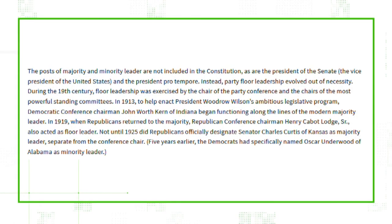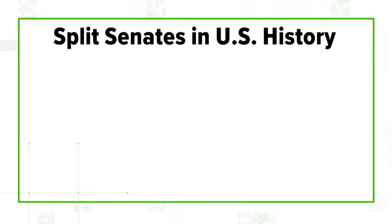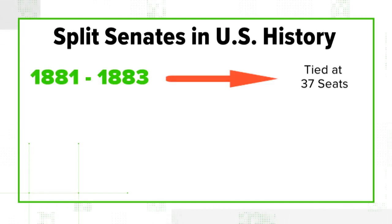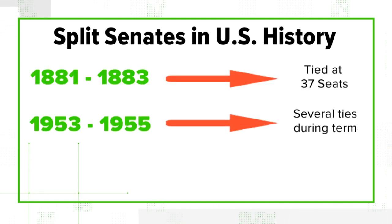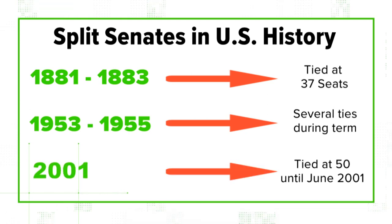The majority leader position is not mentioned in the Constitution. The Senate website confirms that, saying the majority and minority leaders evolved out of necessity. Audet says a split Senate has happened three times in U.S. history: once in the 1800s, again in the 1950s, and most recently after the 2000 election.